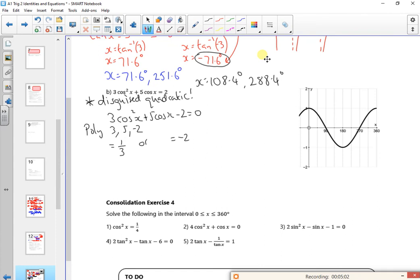Right. Now, if it was just 3x squared plus 5x minus 2, it would just be x equals. Well, this is for cos, so this is cos x equals, cos x equals.